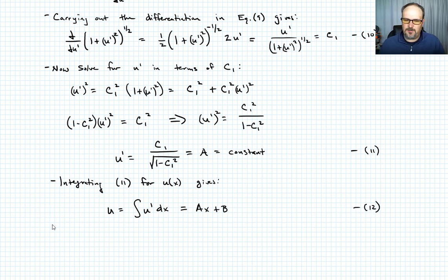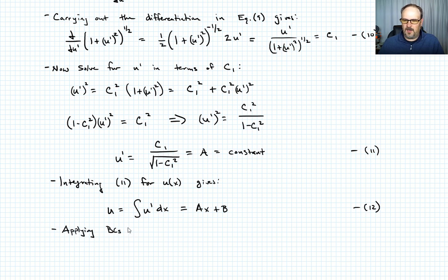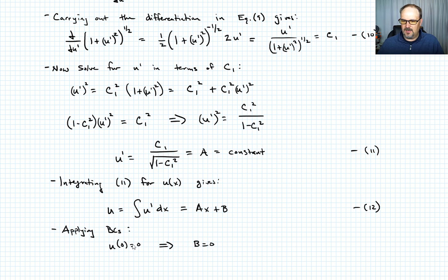Now we apply the boundary conditions: u must be zero when x equals zero, and one when x equals one. Applying these: u of zero equals zero tells us b equals zero, and u of one equals one tells us a equals one.